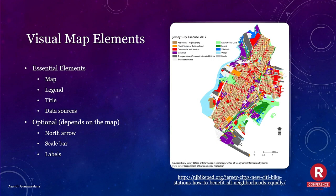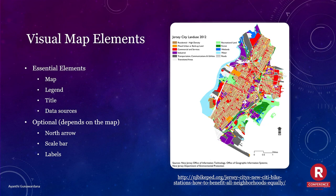I pulled this example of a map because I think it's extremely well done — it really showcases all the important visual map elements. This is from the New Jersey Bike Pet Organization, a map of Jersey City's land use in 2012. It has all the essential elements: the map itself, a very clear legend, title, and data sources. Please always put your data sources, especially for census data where tables change over time. Optional elements — more common in traditional maps — include a north arrow, scale bar, and labels. Scale bars are especially important for smaller maps.